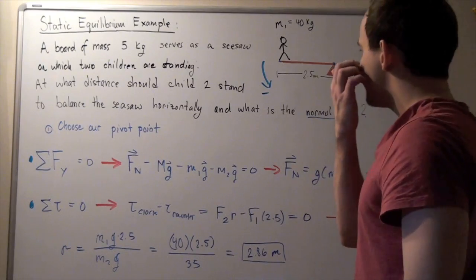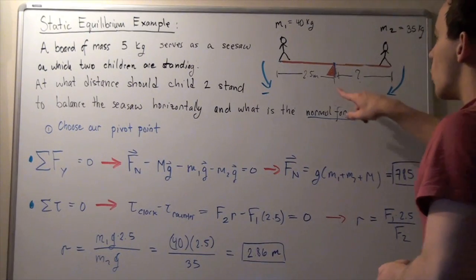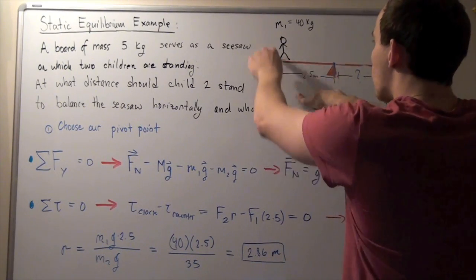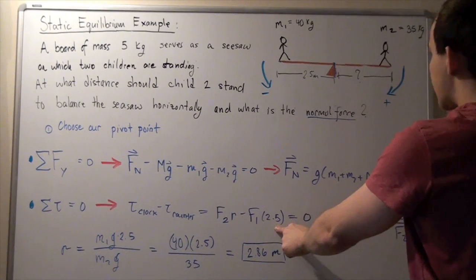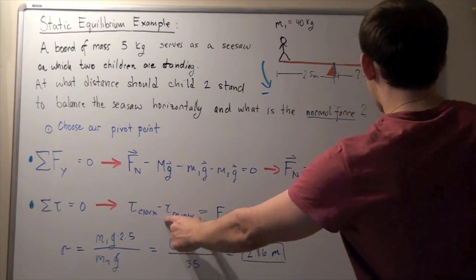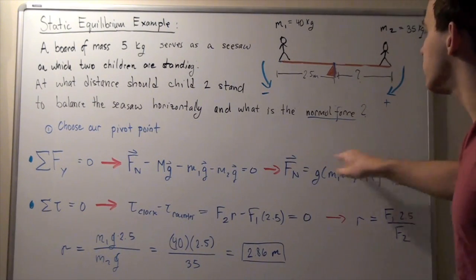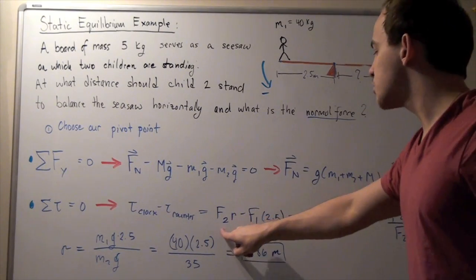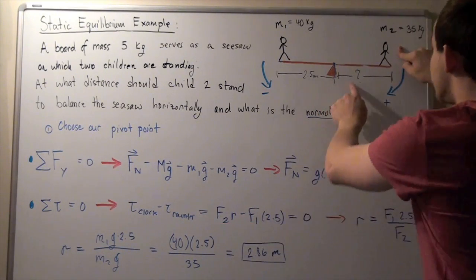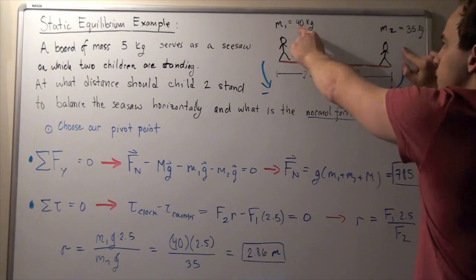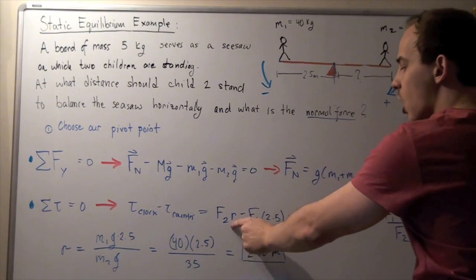Since the angle between the force and the lever arm is 90 degrees, sine 90 equals 1, so torque is simply force times distance. The counter-clockwise torque (negative) is F1 times 2.5, where F1 is M1 times G. The clockwise torque (positive) is F2 times R, where R is our unknown distance and F2 is M2 times G.